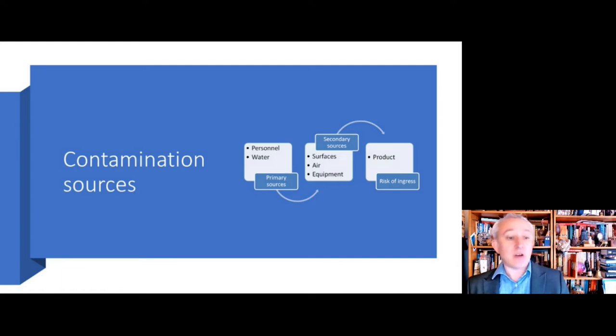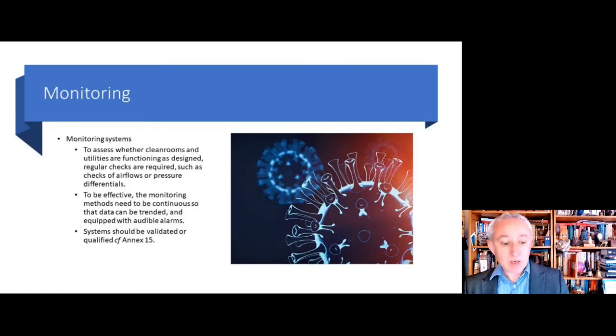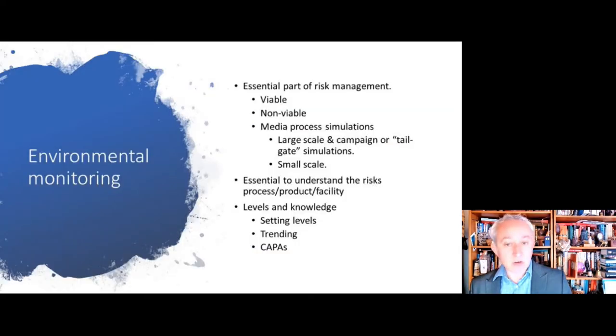So that's fairly broad contamination control introductory stuff. Let's go to environmental monitoring. Monitoring in the environment is one of the key monitoring systems in the pharmaceutical process. There's physical monitoring systems such as pressure, airflow, temperature, and humidity. Checks to see whether clean rooms and utilities are functioning as designed. These are all really important because they're key control factors in terms of the likelihood and distribution of microorganisms.